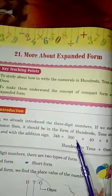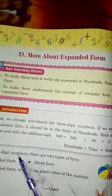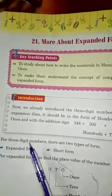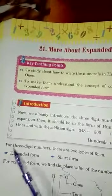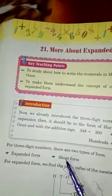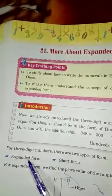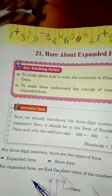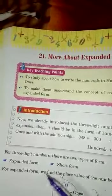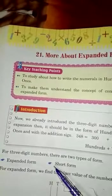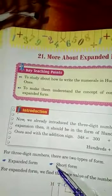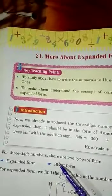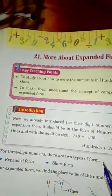In expanded form, for three digit numbers, there are two type of forms: expanded form and short form. From expanded form, place value of the number 100, tens and ones are right to left. First ones, then tens, then hundreds. Let's take some example.